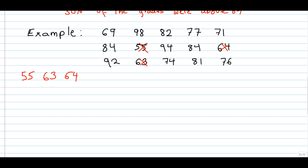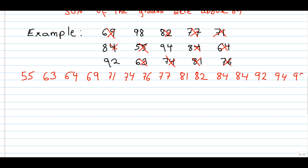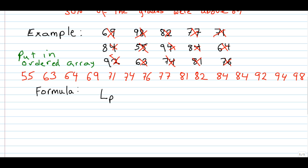Here we have our example again with the students' grades, and we put the numbers in order from smallest to largest — 55 is the smallest and 98 is the largest — so we put the numbers into an ordered array. Remember the formula is L subscript P, where P is the percentile we're looking for, equal to P over 100 times N plus 1. N is the number of observations we have, and we have 15 observations, so N equals 15.